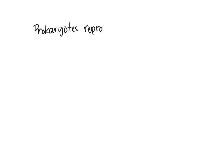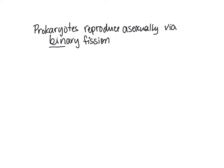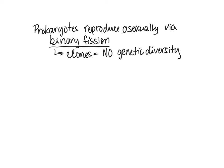In conclusion, prokaryotes reproduce asexually via binary fission. Binary fission produces clones, meaning they are genetically identical to each other — so no genetic diversity occurs. This is fine when conditions are stable.